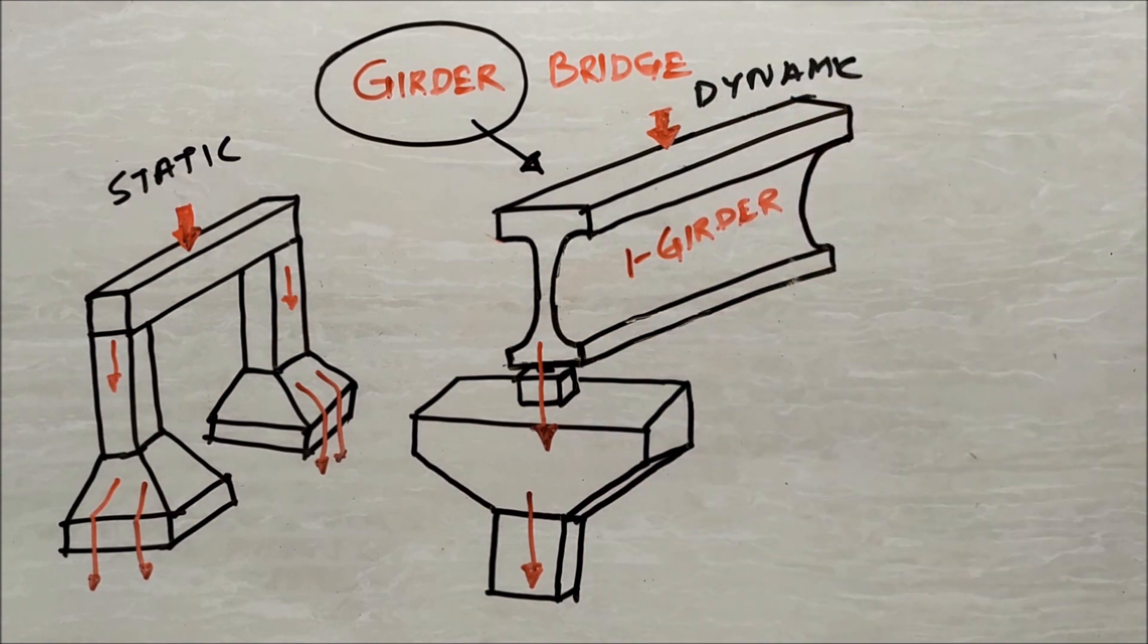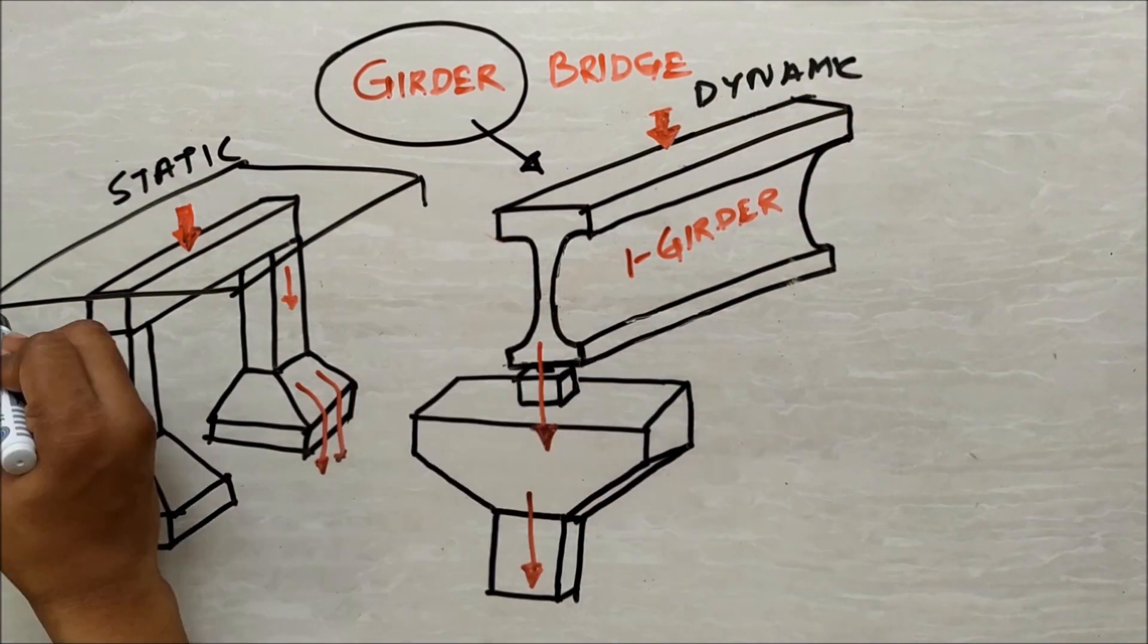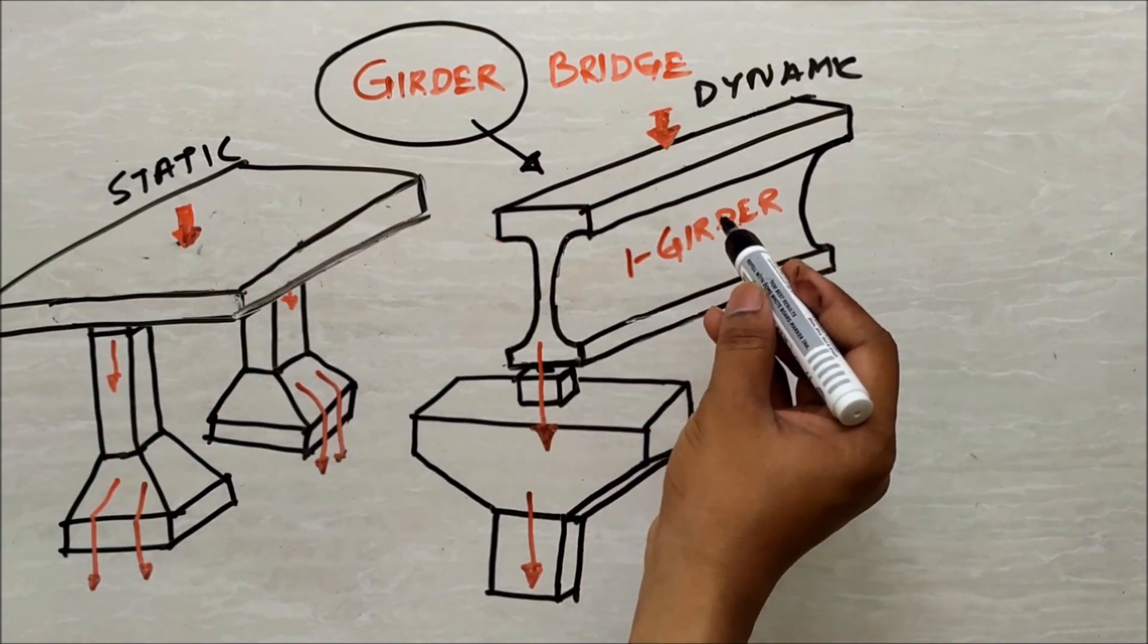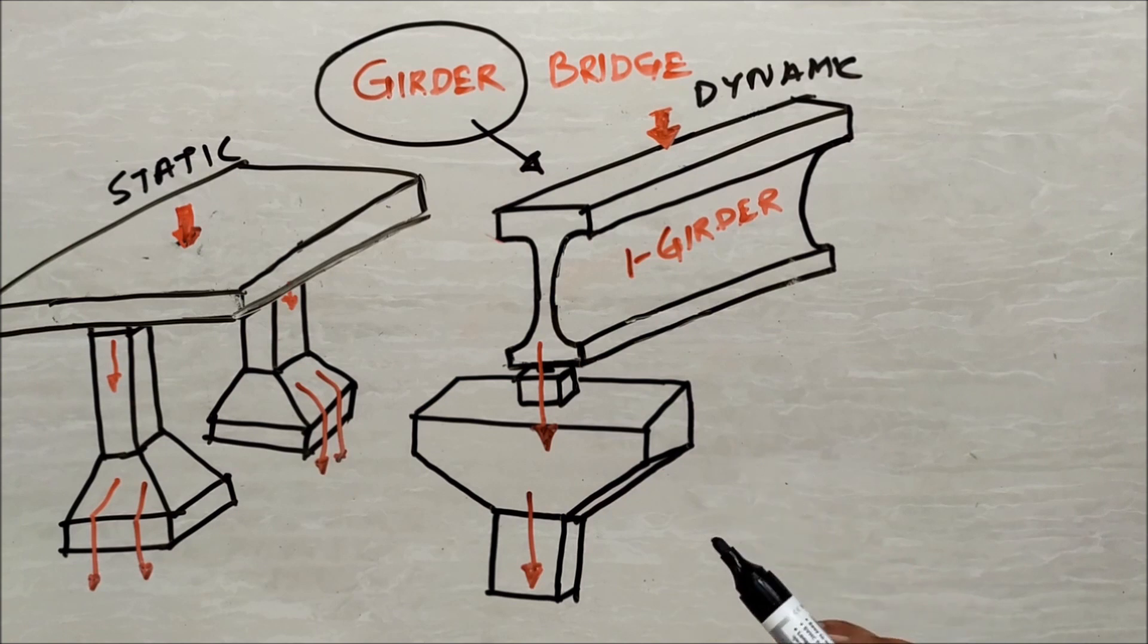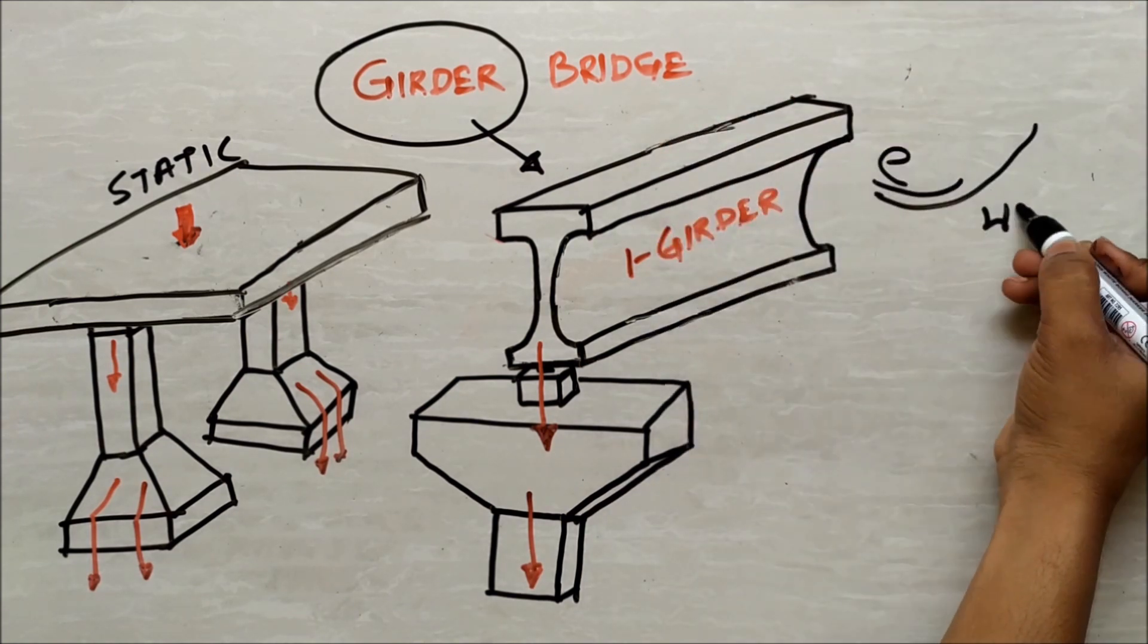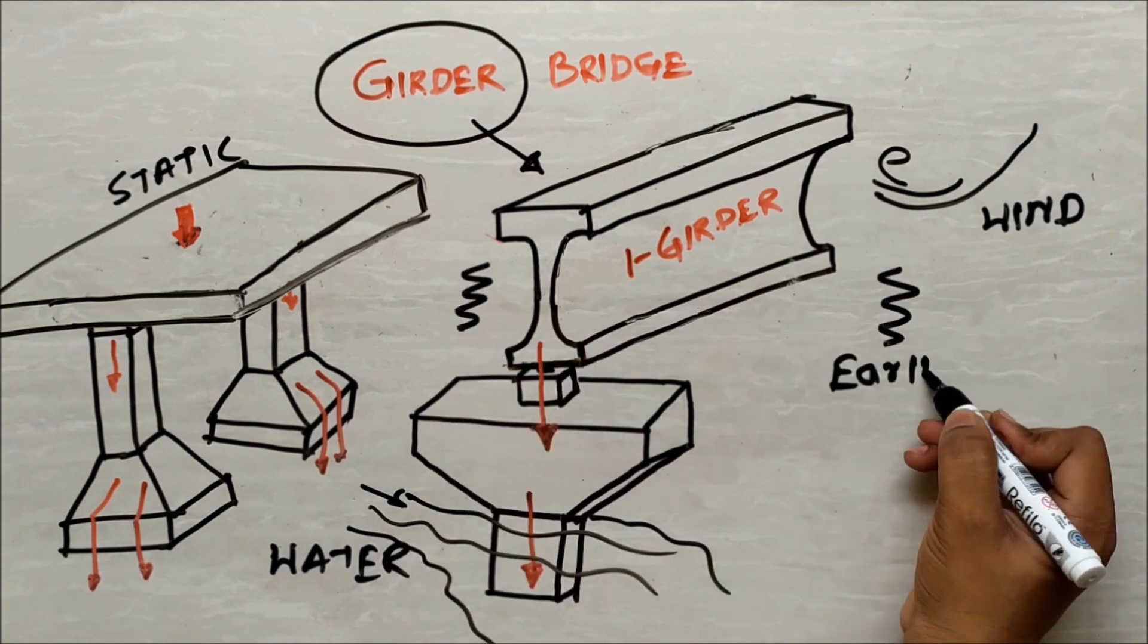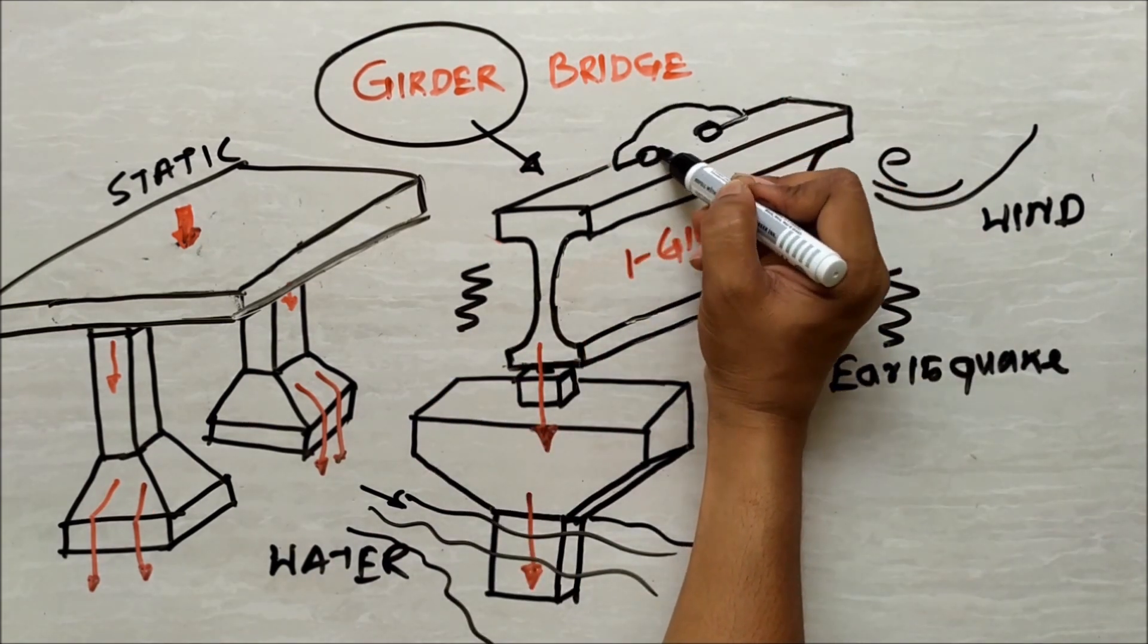Static load is a constant load with respect to time, like a slab is resting on the beam and dynamic load means a load changes in magnitude, direction and position with respect to time, such as wind loads, forces by water current, seismic loads due to earthquakes and rolling loads like a running car.